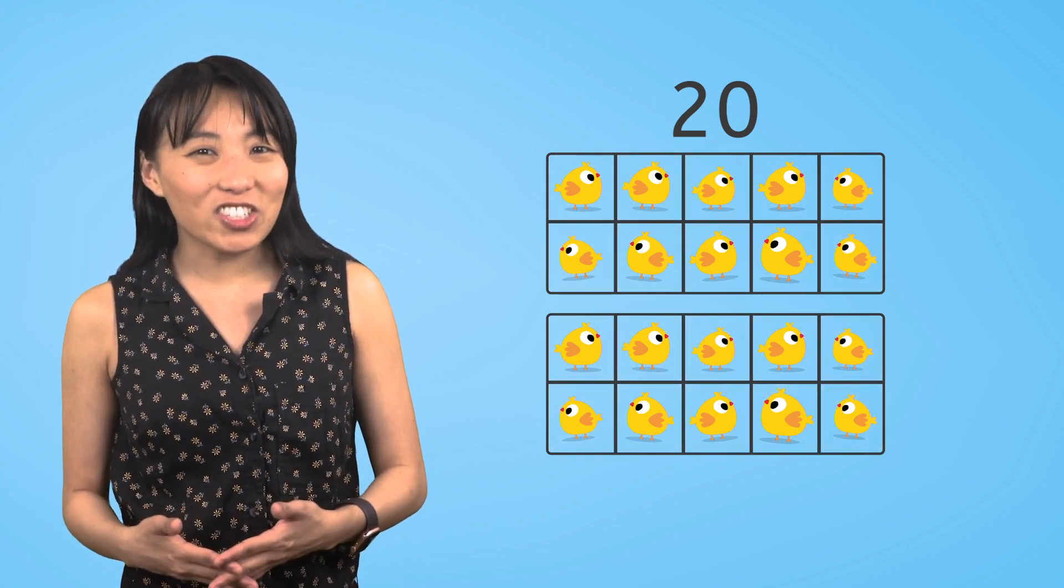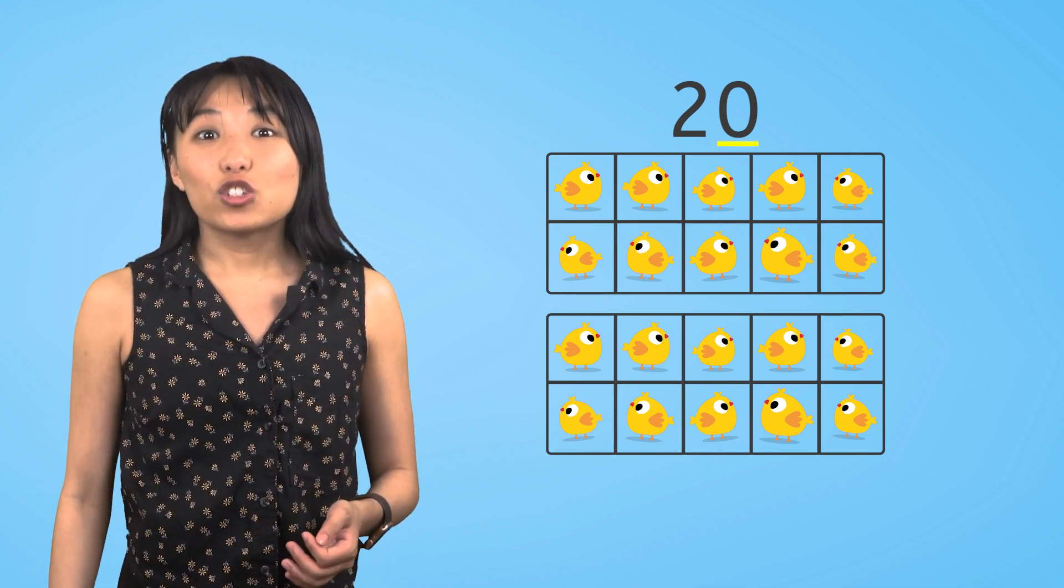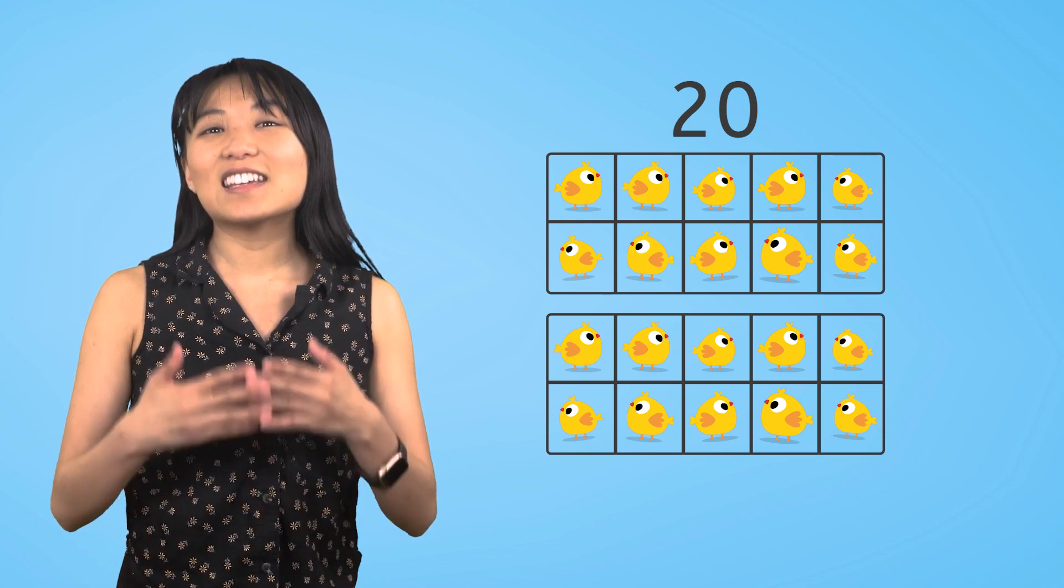And how many extra chicks are there now? Zero, right? Two groups of ten is twenty.